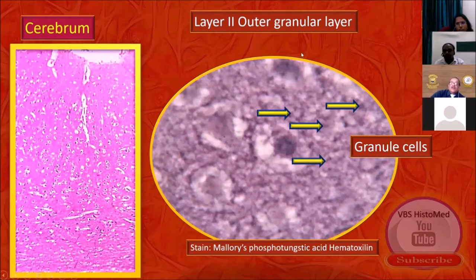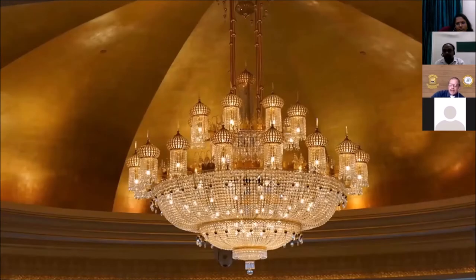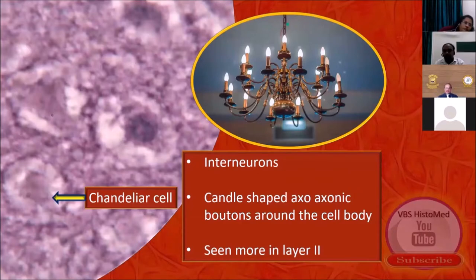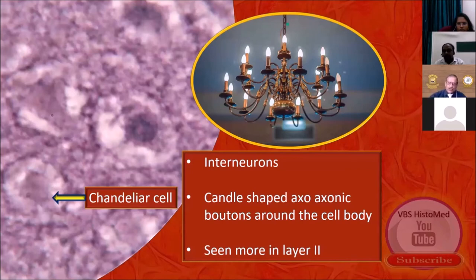Now, what is this chandelier doing here in a serious discussion on the cerebrum? Watch carefully — in one particular layer, I think it is layer two, you will see some cells with a foamy cytoplasm. That cell virtually looks like a chandelier, which is why it is called chandelier cells. I checked the literature — there is no convincing definite function of this cell known, though there are a few controversies. For undergraduates, it is nice to know and interesting to know, but you need not point out this cell in the exam.